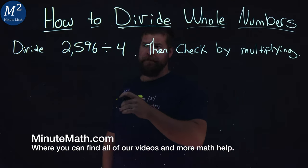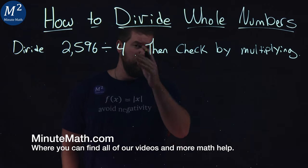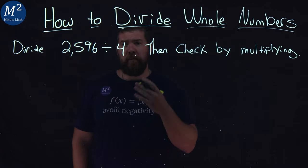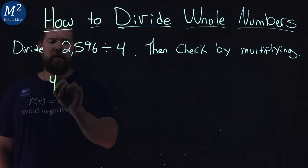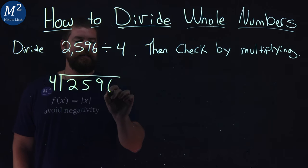We're given this problem: 2,596 divided by 4. We're going to divide this using long division, then check by multiplying. Let's set up long division. 4 goes into 2,596.